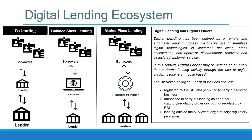Two structures we discussed in the digital lending ecosystem: sourcing arrangement — where the platform is only sourcing the loan and the entire loan is given by a lender — and co-lending, where a sourcing lender and another lender jointly lend to the borrower. There can also be a mix of both — sourcing plus co-lending. Marketplace lending is different; it's like classified ads where multiple lenders are listed and borrowers choose whichever suits them.